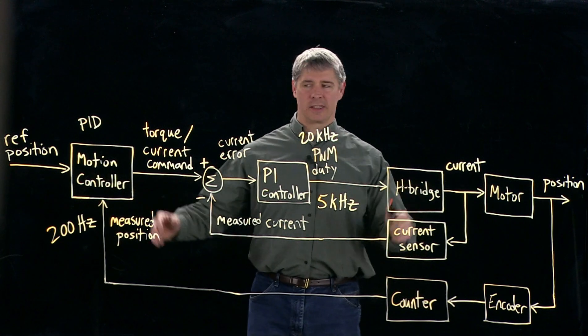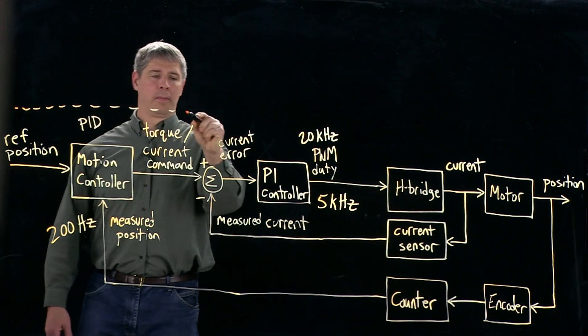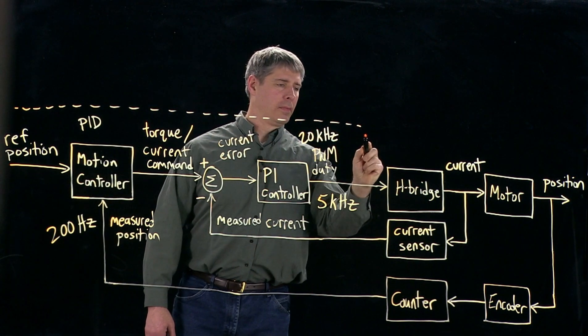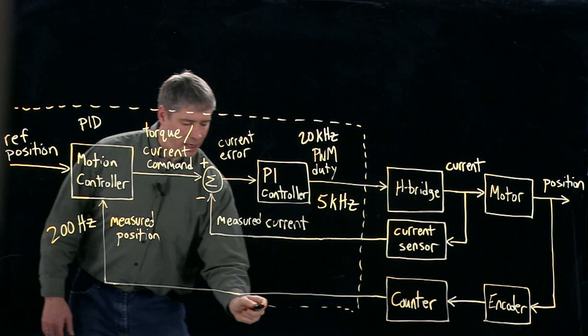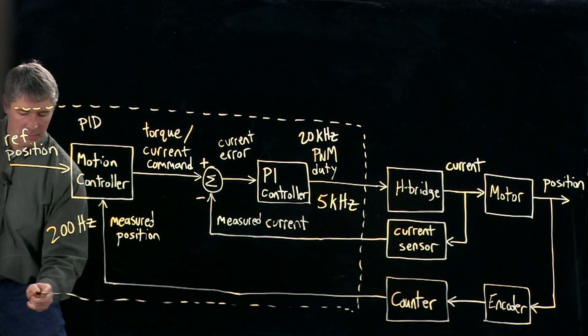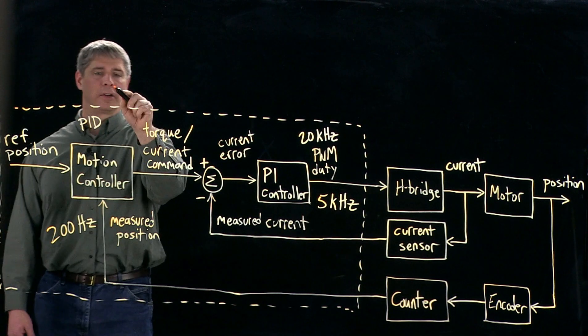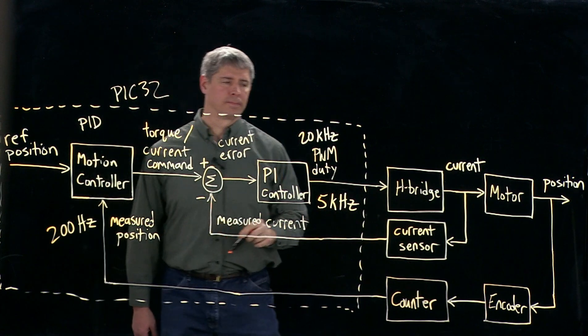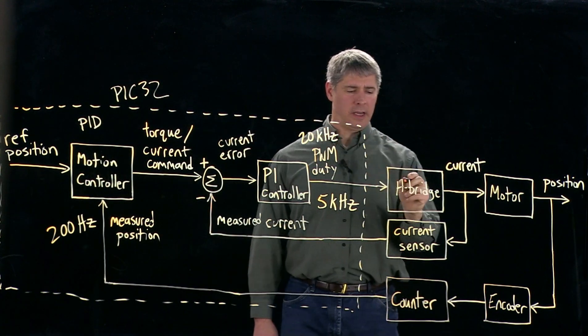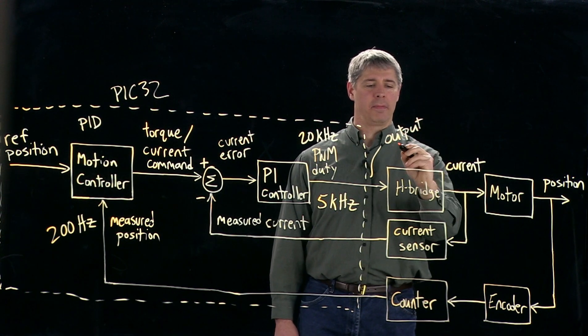We can also box this up according to what's in the microcontroller. So everything inside of this dashed box is inside the microcontroller. So here, this interface with the H-bridge, this is an output compare because that's where we've got the PWM.